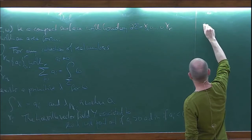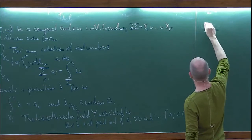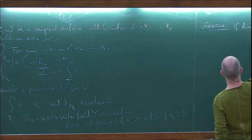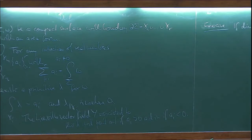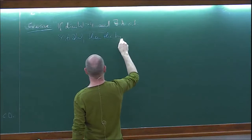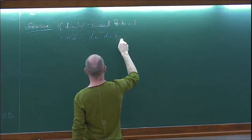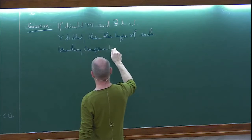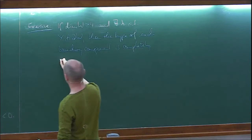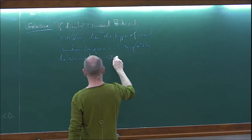That's what happens in dimension 2: any surface with boundary and an area form admits such primitives. A little fact — another exercise that's slightly more tricky but not very hard — is that if you go to higher dimensions, so if the dimension of W is at least 4, and there exists a primitive lambda such that Y is transverse to the boundary of W, then the type of each boundary component is completely determined by omega restricted to that boundary component.